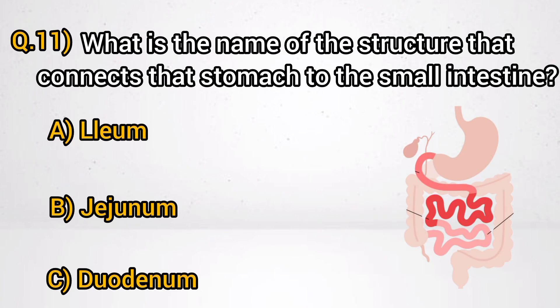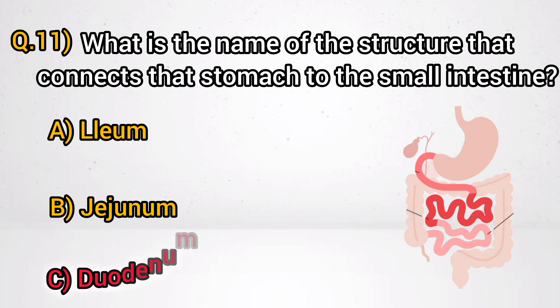Question 11: What is the name of the structure that connects the stomach to the small intestine? Answer C: Duodenum.